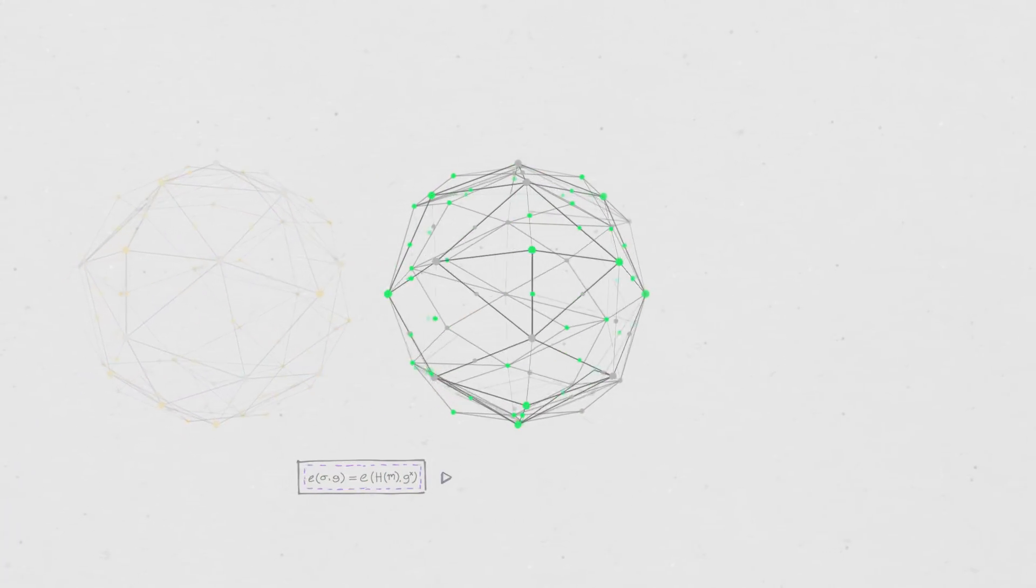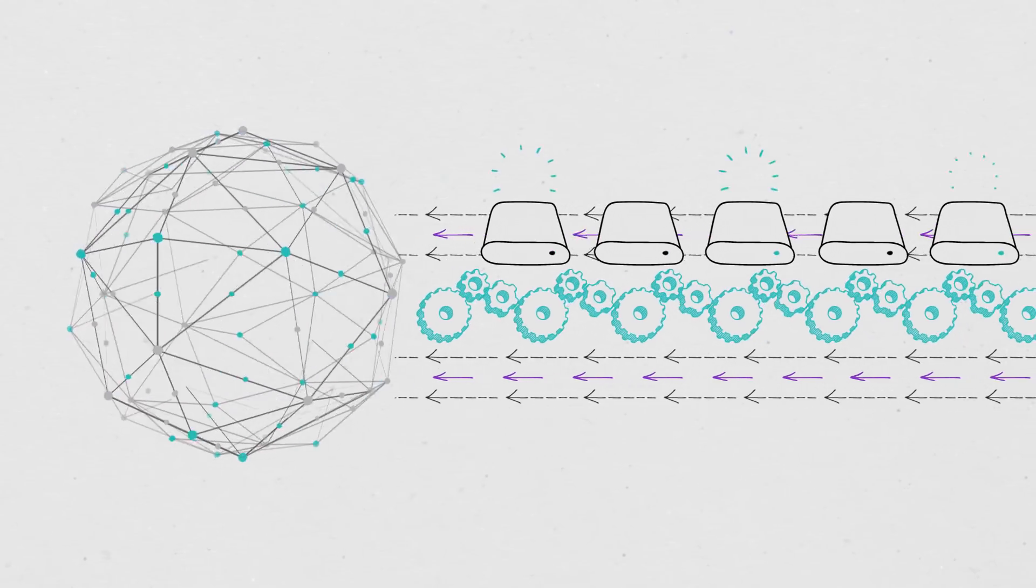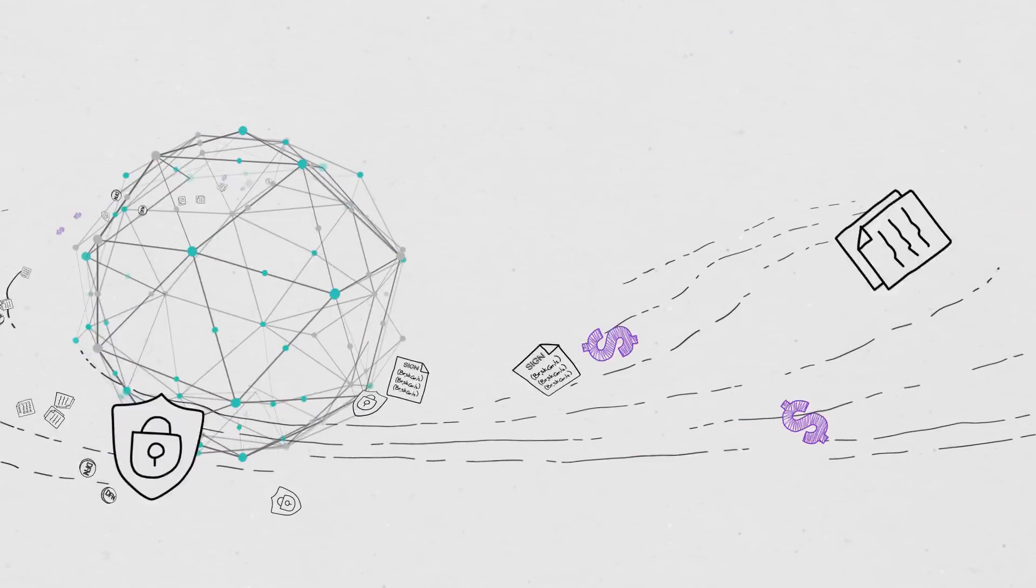This randomness also drives protocols that give the DFINITY computer unlimited capacity. With every new mining computer that participates, the network scales out to process and store more data.